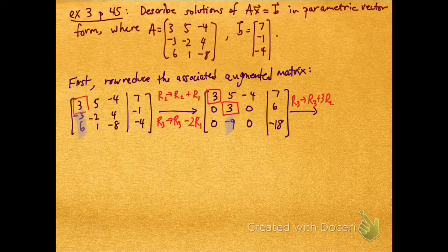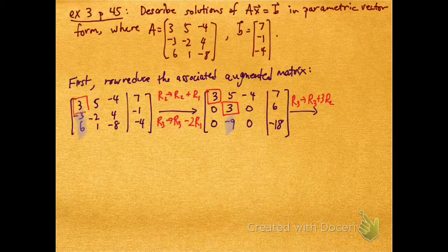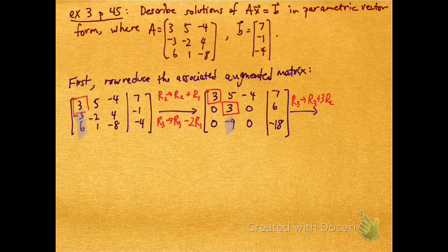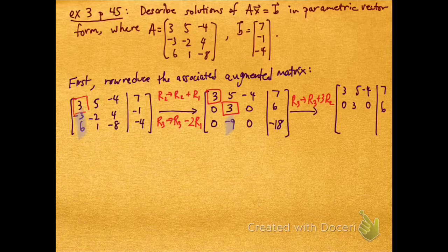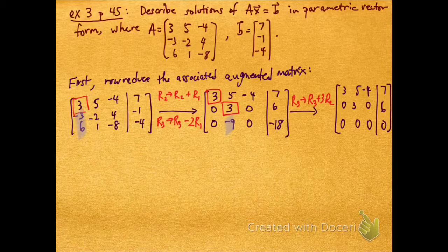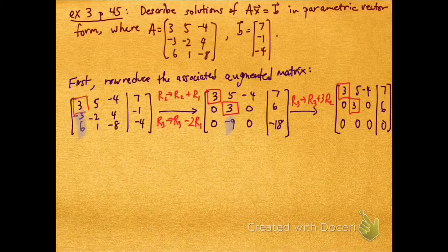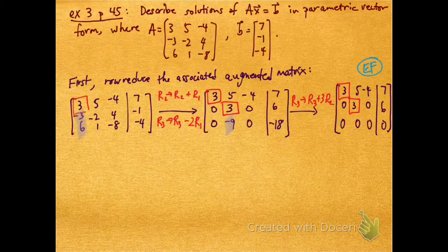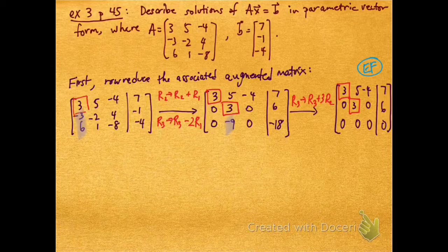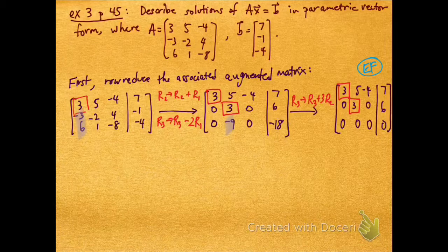I can achieve that by replacing row 3 with row 3 plus 3 row 2. So the first two rows stay the same, and the last row becomes all 0s. And I notice now, when I put boxes around my pivots, that the matrix is now in echelon form.